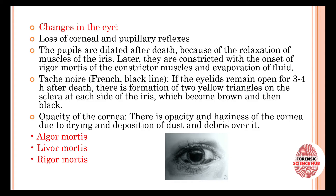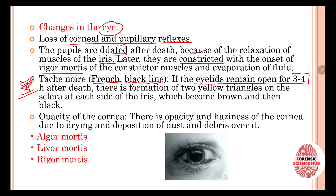There are important changes that occur in the eyes. First, there is loss of corneal and pupillary reflexes. The pupils are dilated immediately after death due to relaxation of the iris muscles, but later become constricted with the onset of rigor mortis of the constrictor muscles and evaporation of fluid. There is also a term called tache noire — a French word for black line — which occurs if the eyelids remain open for three to four hours after death.